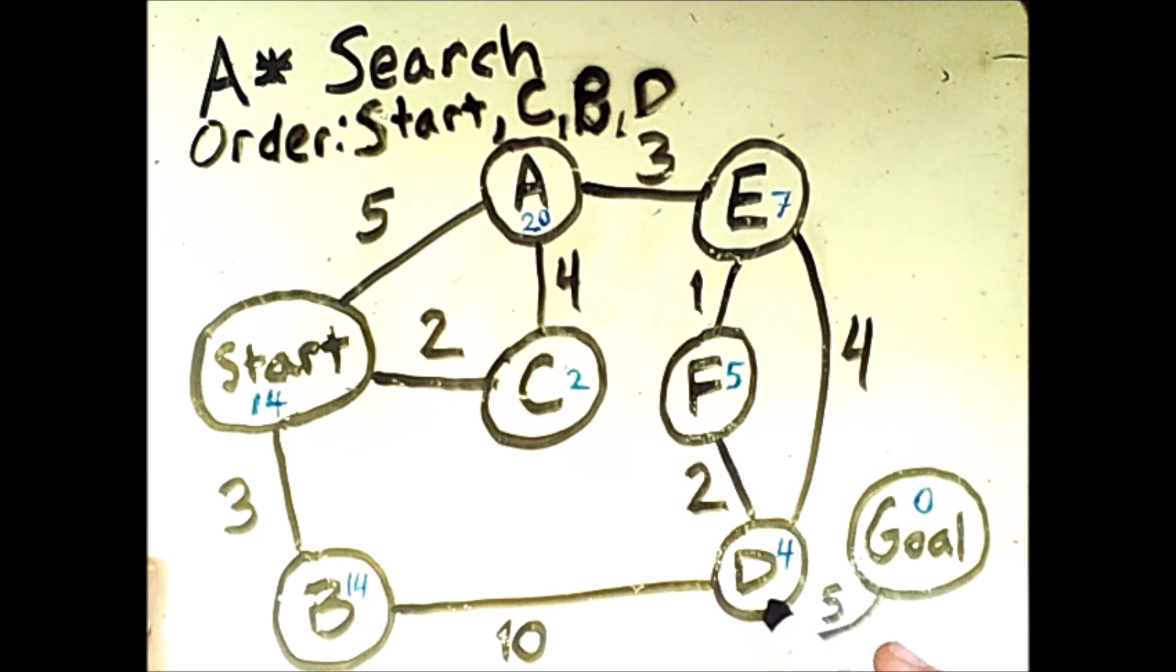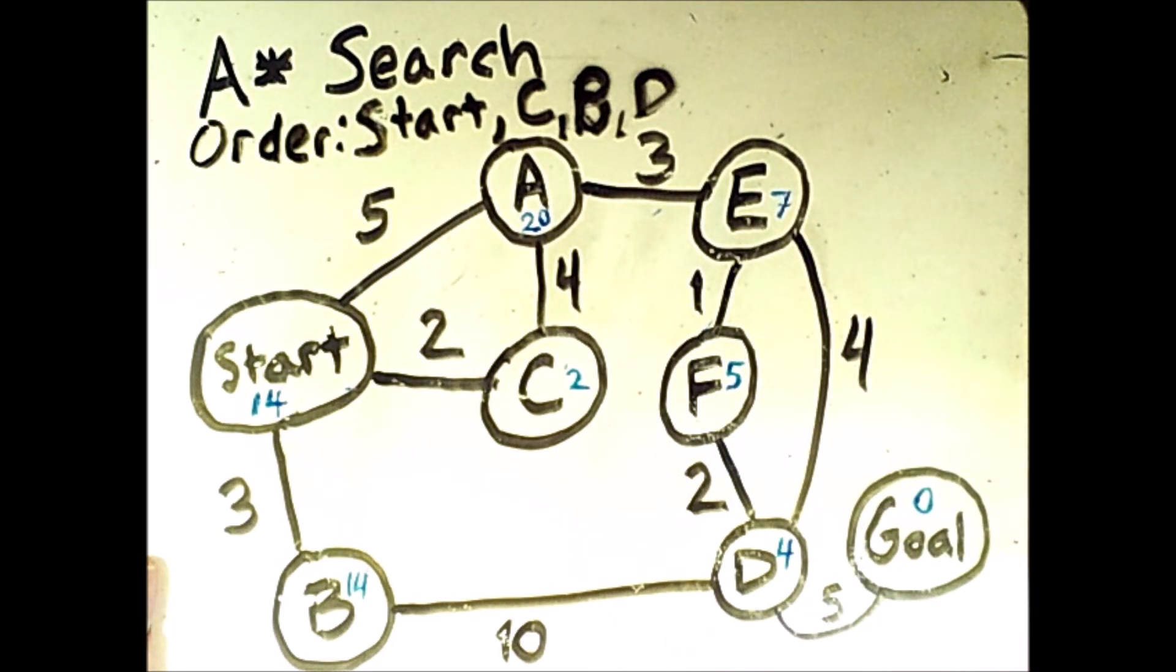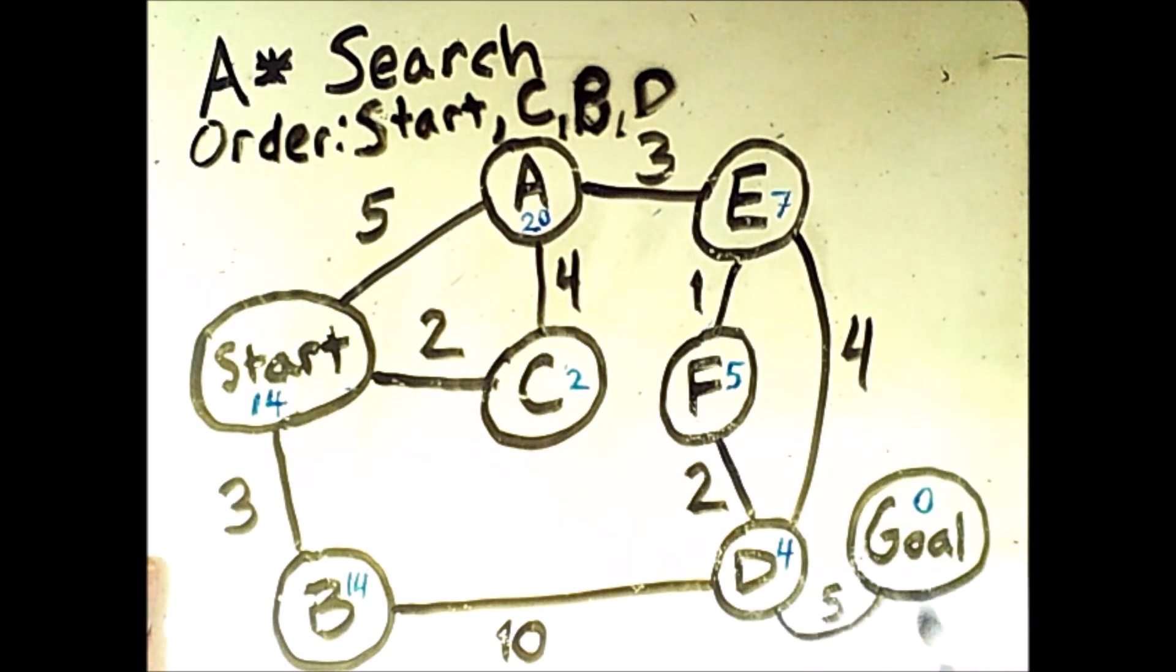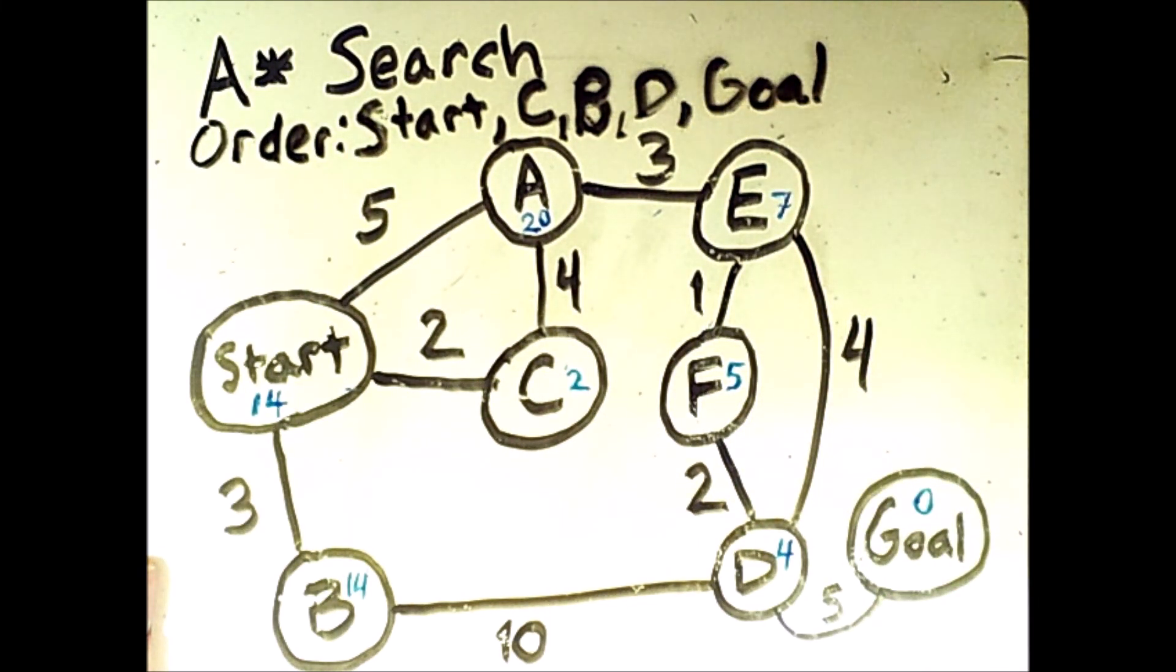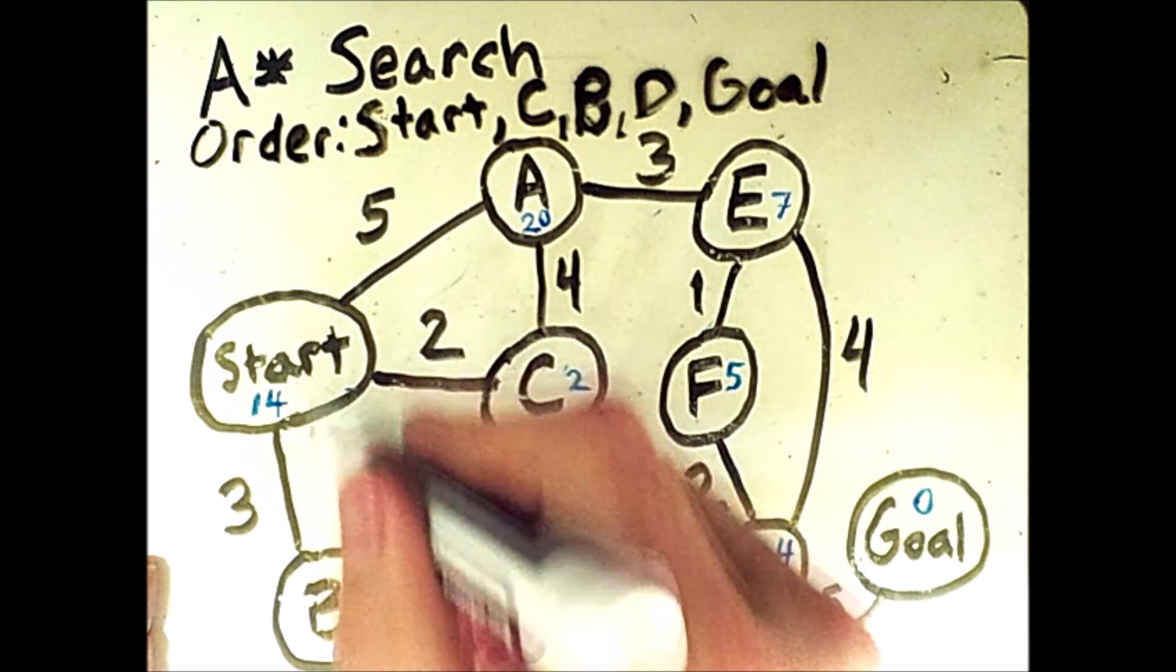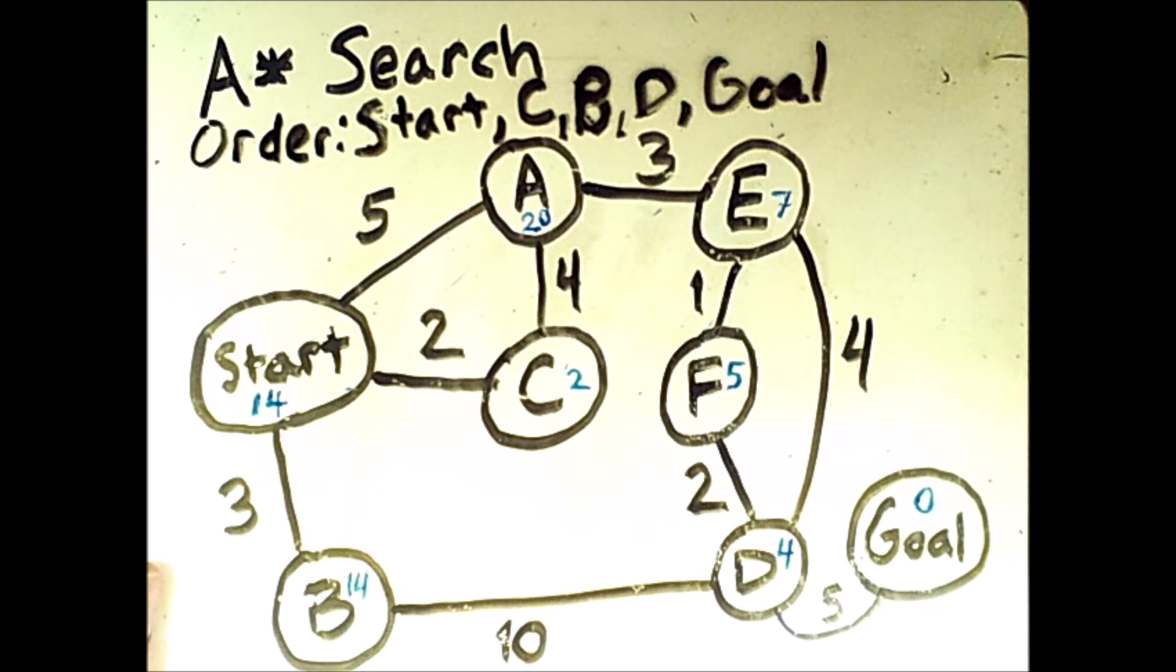From here, the only options from d are f, e, and g. Now going to f or to e has higher costs because we're backtracking. But if we go straight from d to the goal, we'll be done. So that's what we'll do. We'll terminate early. We'll have searched fewer states, but the path we return, which is from start to b to d to goal, is not optimal. So it's very important that we have some rules for how we define heuristics. And those rules will be discussed in the next video.